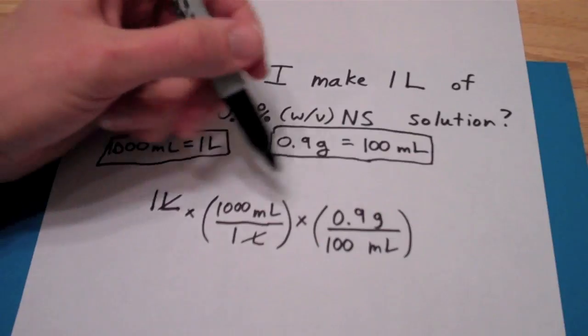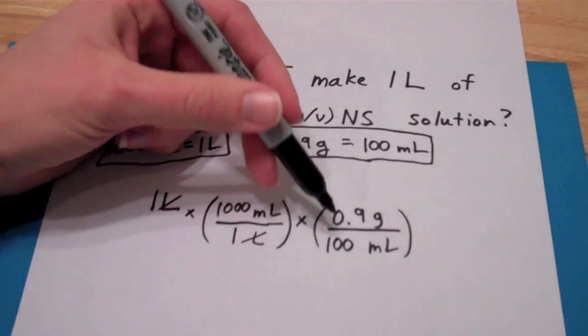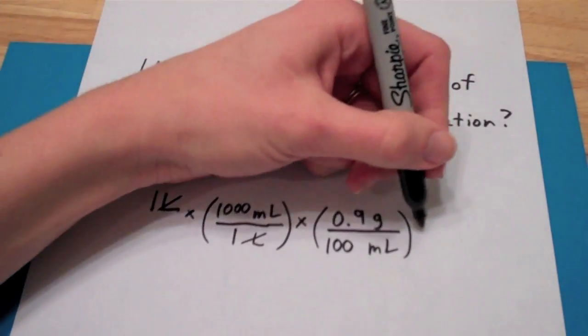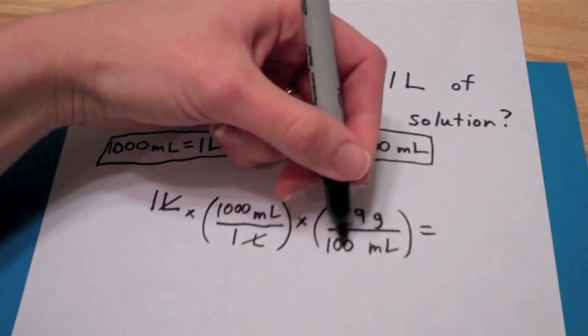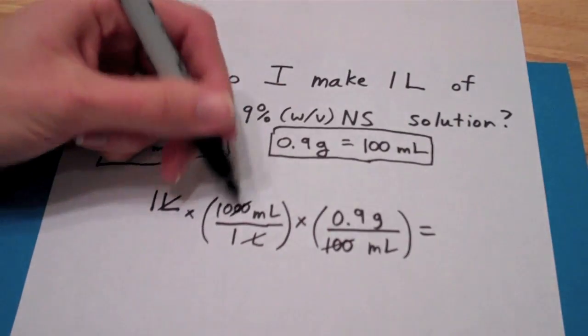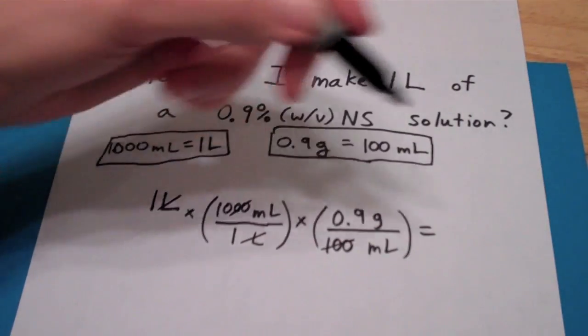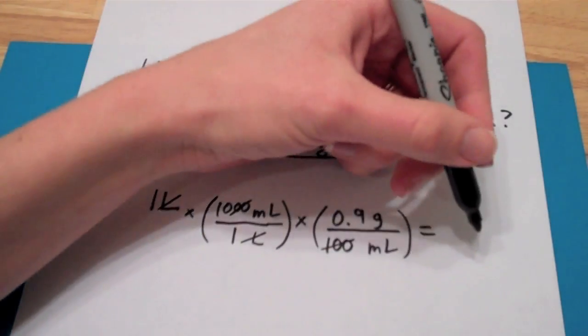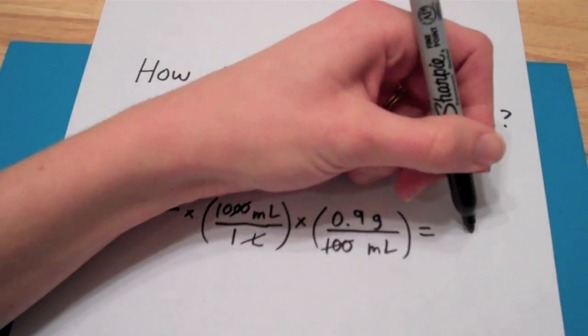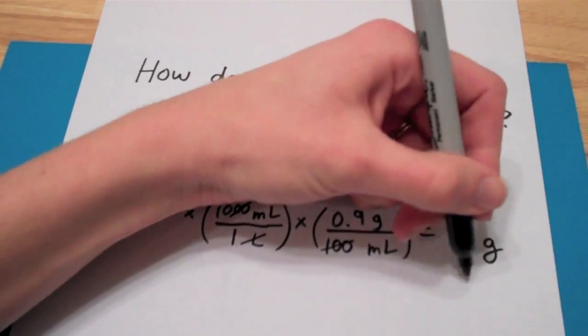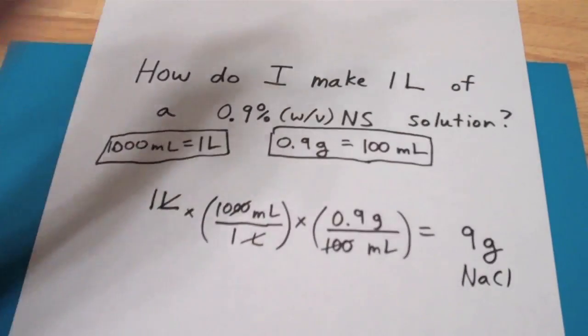So 1,000 times 9 divided by 100, and we get, easily cancel 2 of those zeros out, cancel 2 of those zeros out. So about 10 times 0.9 gives us 9 grams of sodium chloride.